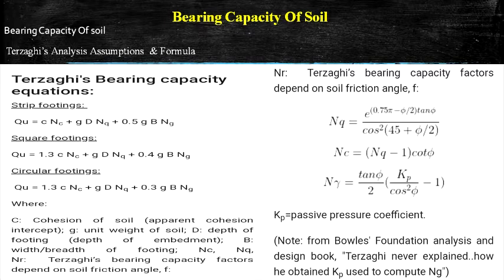In this slide I have discussed three types of footing. For strip footing, the formula is QU equal to C·Nc plus gamma·D·Nq plus 0.5·gamma·B·N-gamma. For square footing, the formula is QU equal to 1.3·C·Nc plus gamma·D·Nq plus 0.4·gamma·B·N-gamma. For circular footing, the formula is QU equal to 1.3·C·Nc plus gamma·D·Nq plus 0.3·gamma·B·N-gamma.